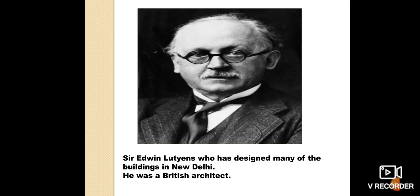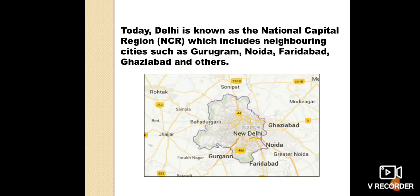This is the picture of Sir Edwin Lutyens, who had designed many of the buildings in New Delhi. He was a British architect. Today, Delhi is known as the National Capital Region, NCR, which includes neighboring cities such as Gurugram, Noida, Faridabad, Ghaziabad, and others.